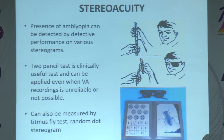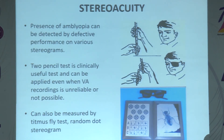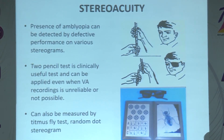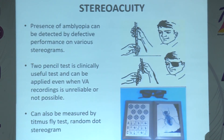The presence of amblyopia can be detected by defective performance on various stereograms. The simplest is the two pencil test, which is clinically useful and can be applied even when visual acuity recording is unreliable or not possible. Other stereo acuity charts can also be used, including the Titmus fly test and random dot stereograms. The two pencil test can be used vertically or horizontally.